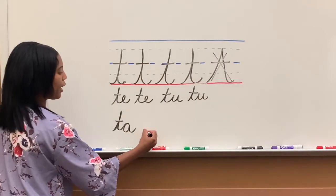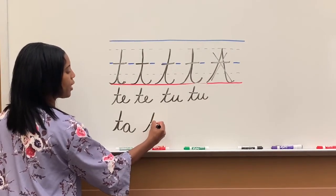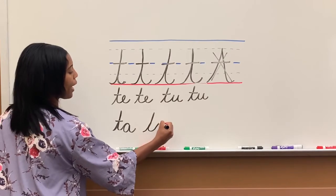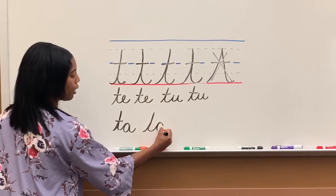Let me show you that again. I'm going to start with the T. When I start to do A, I go halfway, then I come back around, finish off my A.